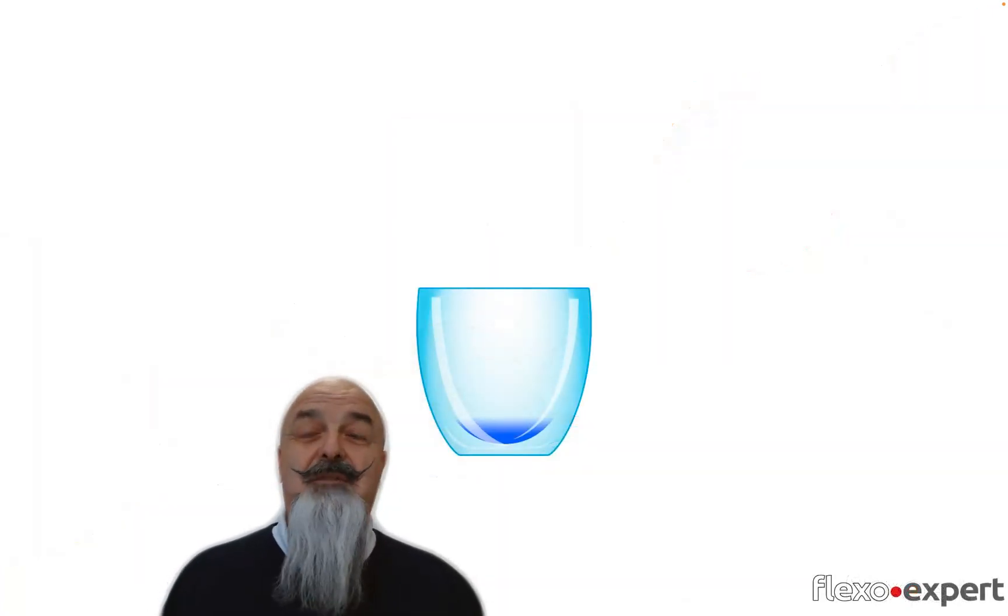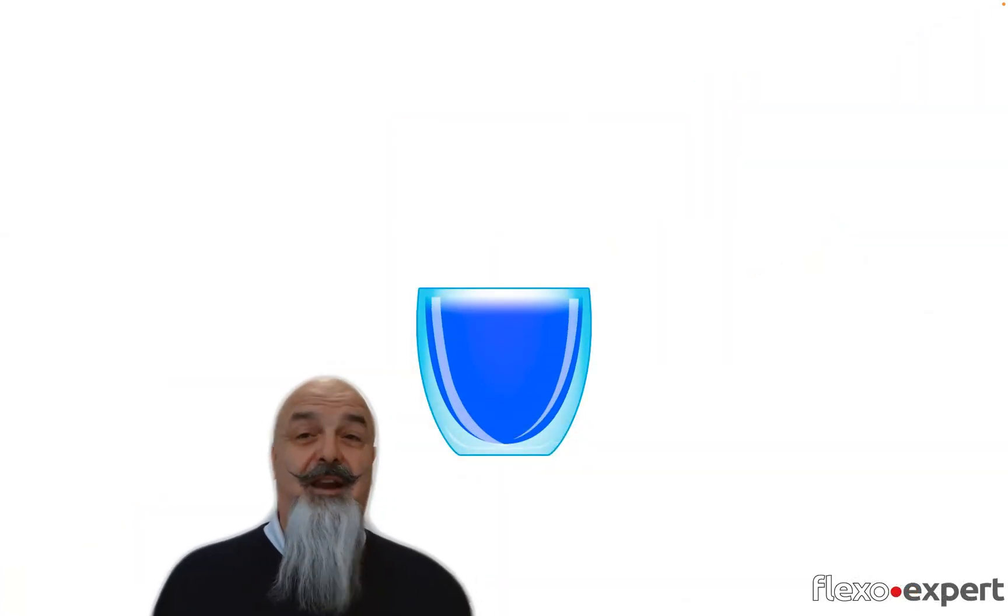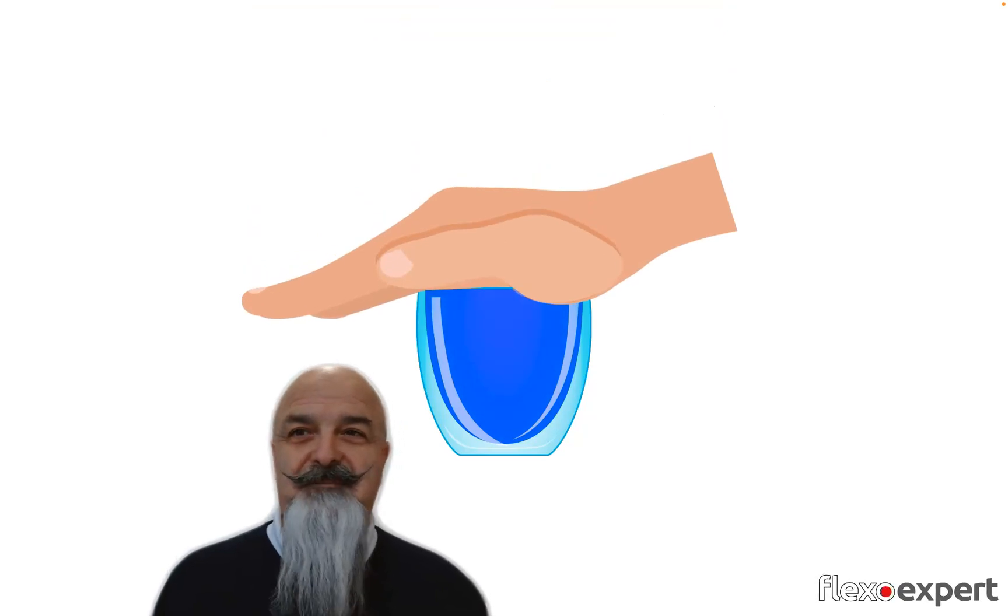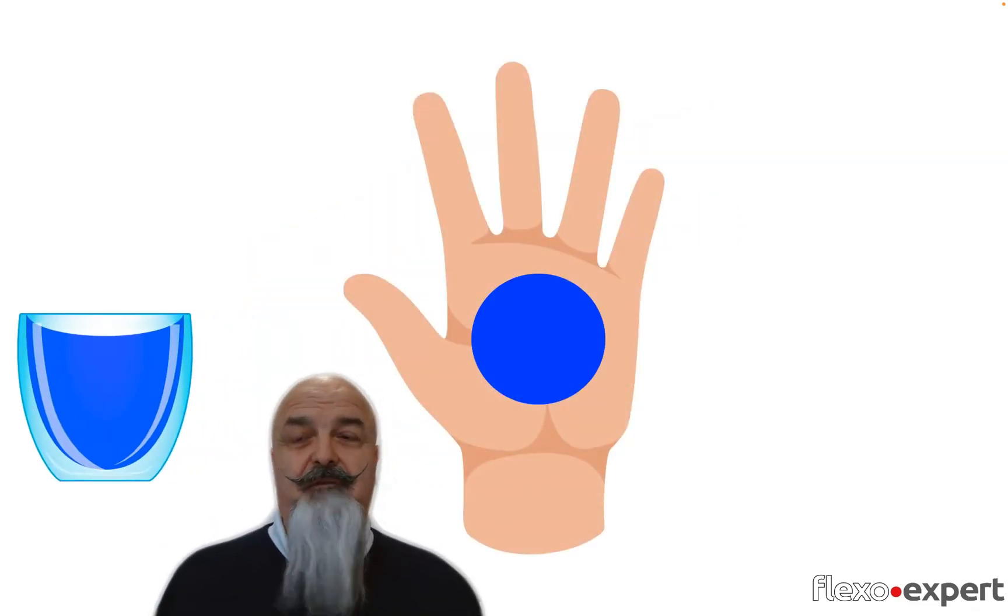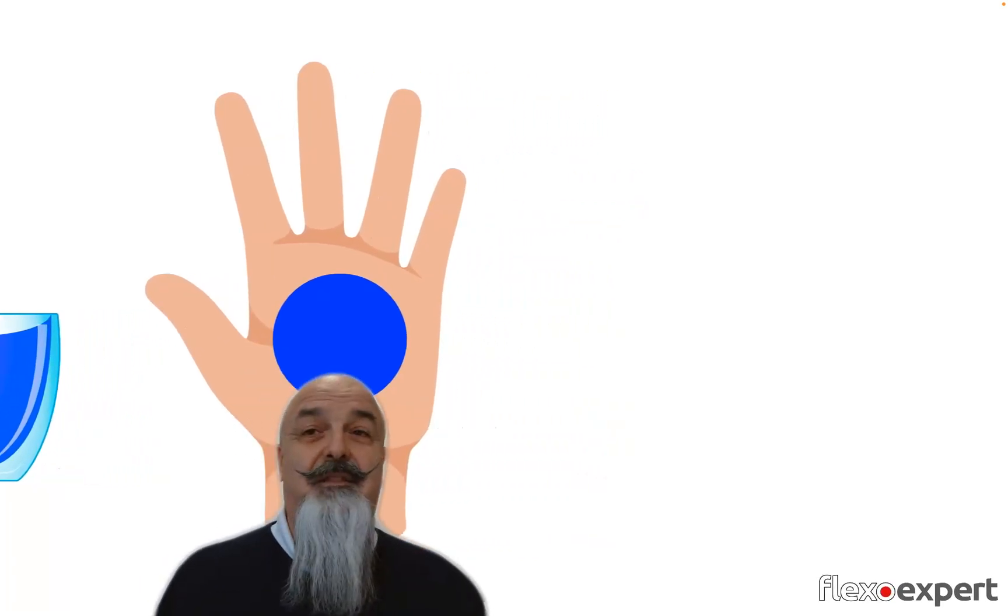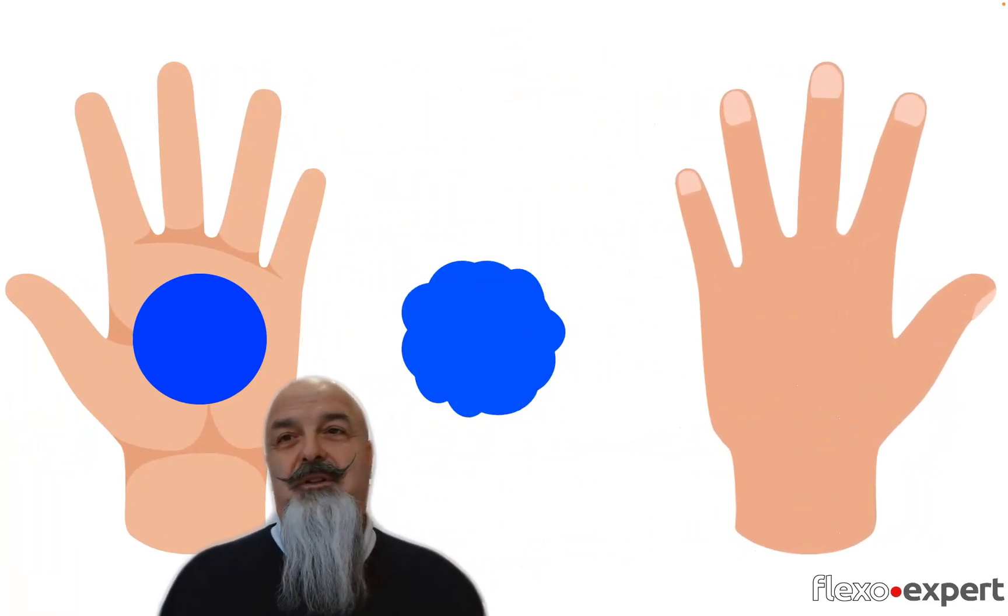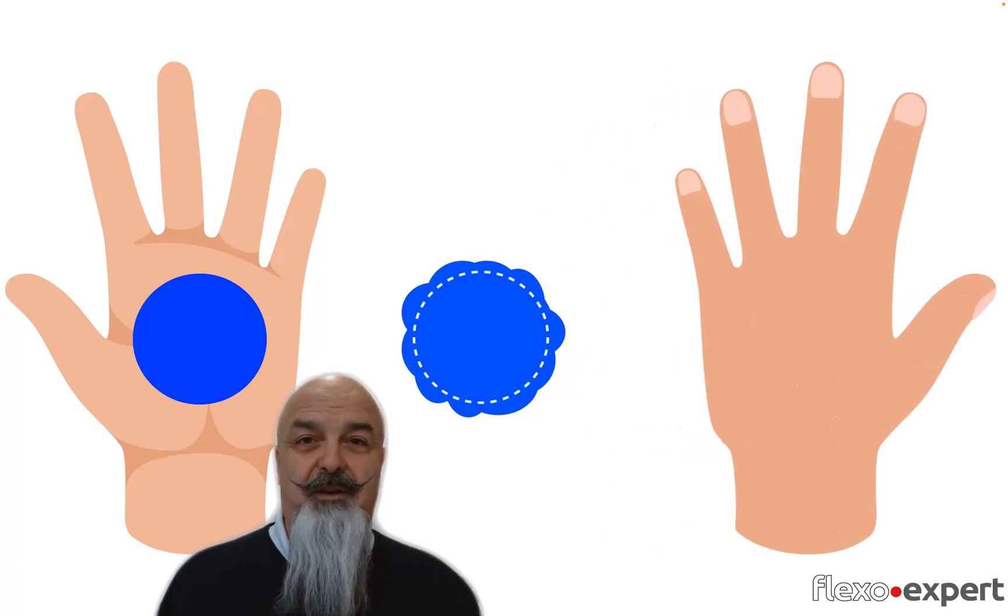So, the principle of flexography is like having a glass that is filled with some liquid and we touch the surface with our hand. When we release the contact, we would have a certain quantity of liquid on our hand. For sure, not all the liquid that is in the glass. Then we press this onto the surface that will receive the imprint and this would result in a certain spread of the liquid.